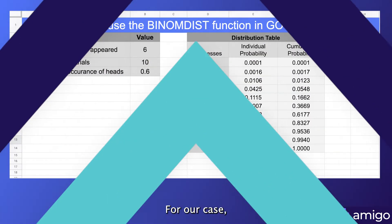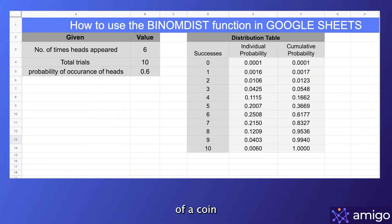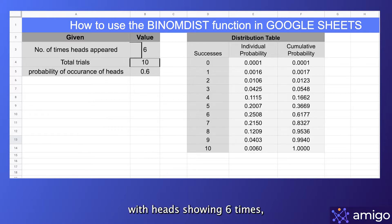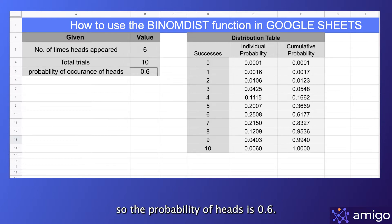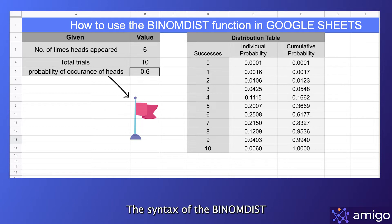For our case, I have considered the experiment of a coin tossed 10 times, with heads showing up 6 times. So the probability of heads is 0.6. The occurrence of heads is considered to be the successful outcome of this event.